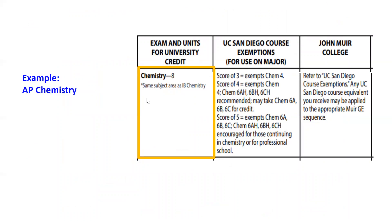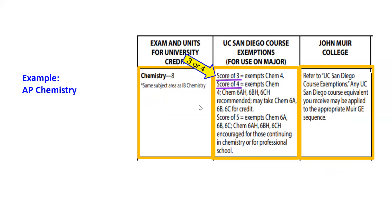For AP Chemistry, a score of three or higher grants eight units. To count toward Muir GEs, you must also earn course credit. Course credit is granted depending on your score. A score of three or four grants credit for Chemistry 4. Since Chemistry 4 is on our Muir GE list, this counts as one course in our Chemistry, Physics, and in the Environment GE theme, meaning you need just two more courses in this GE theme to clear your Math Natural Sciences GE area. If you needed to move forward with Chemistry for major or pre-health requirements, your appropriate placement is enrolling in Chemistry 6A. You cannot enroll in Chemistry 4 because you already got credit for that class.